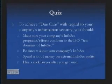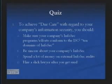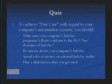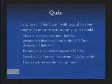Question three: To achieve due care with regard to your company's information security, you should: A, make sure your company's InfoSec programs and efforts conform to ISC Squared's ten domains of information security; B, be sincere about your company's information security; C, spend a lot of money on external InfoSec audits; D, hire a slick lawyer after you get sued. The right answer is A. Unfortunately, a lot of people find themselves on answer D, as absurd as that sounds.